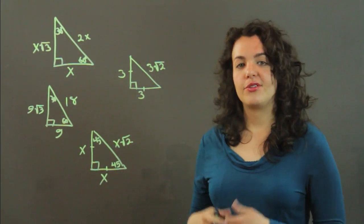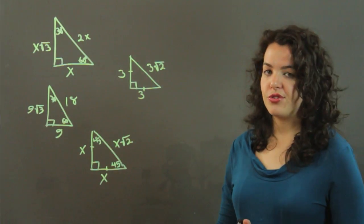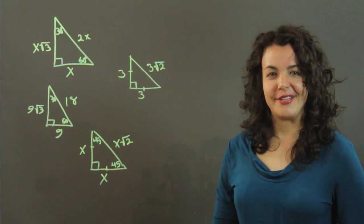And there you have it. We've learned how to find the hypotenuse for two different special right triangles. I'm Julia. Thank you.